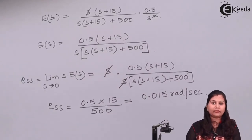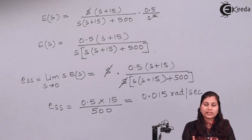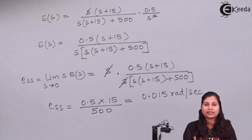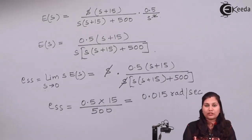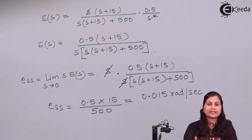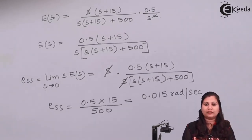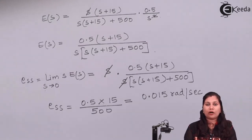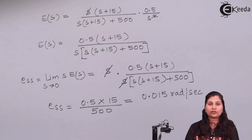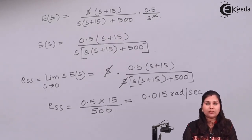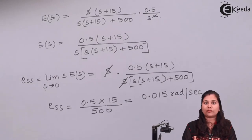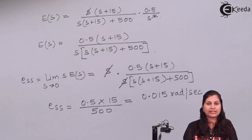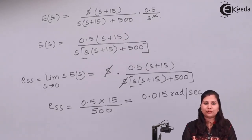In summary, we were given the open loop transfer function for a second order unity feedback control system. We wrote the characteristic equation, compared it with the standard form to get the damping ratio and natural frequency, then used the appropriate formulas to find the transient response specifications. In this way we can find the time response specifications for a system when its open loop transfer function is given. I hope this problem is clear to you, thank you.